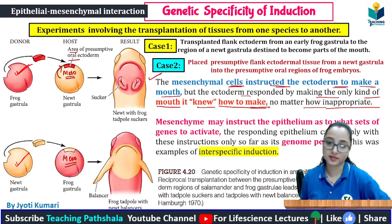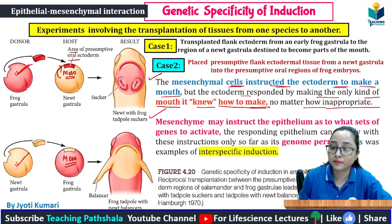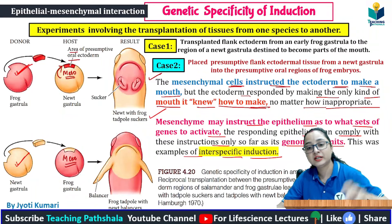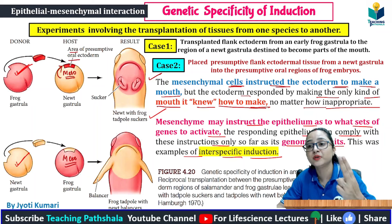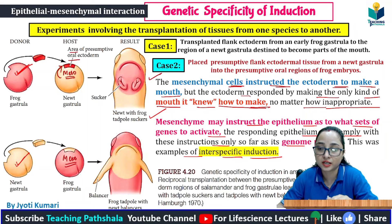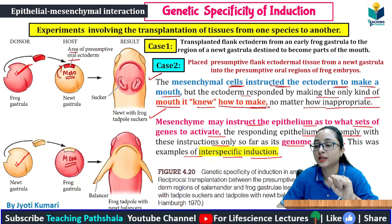So children, look at what is said here: The mesenchyme may instruct the epithelium as to what set of genes to activate. The responding epithelium can comply with these instructions only so far as its genome permits. This is also an example of interspecific induction, because we have taken two species — one Newt and one frog. The mesenchyme is giving instructions to the ectoderm to activate mouth-forming genes.